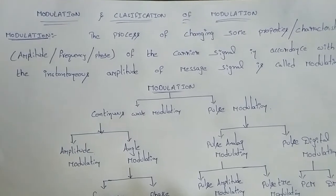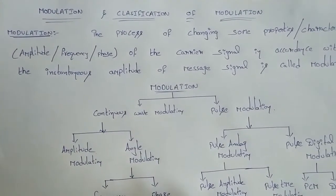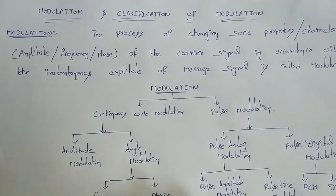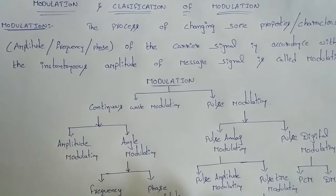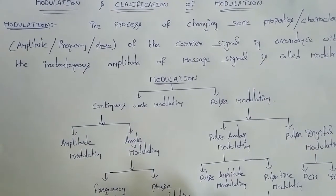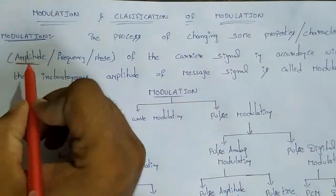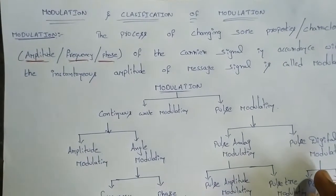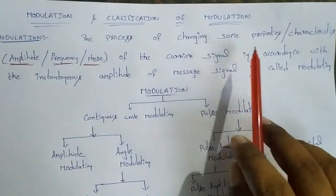Modulation and classification of Modulation. We have a low frequency signal and high frequency signal. The strength of the signal — we call it Modulation. The definition of Modulation involves the message signal and the carrier signal. The carrier signal will change. Carrier amplitude will increase and decrease. Only carrier signal properties will change. The minimum properties are amplitude, frequency and phase. These three characteristics are the minimum characteristics of the carrier signal.